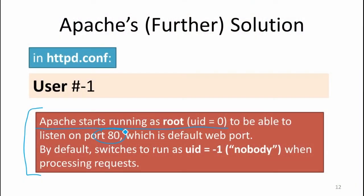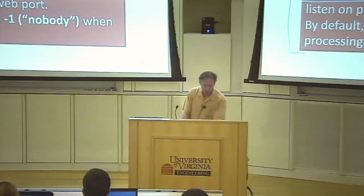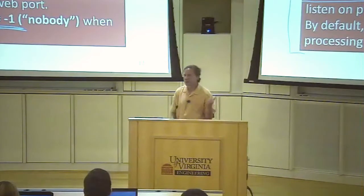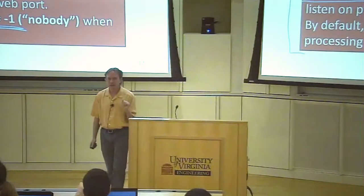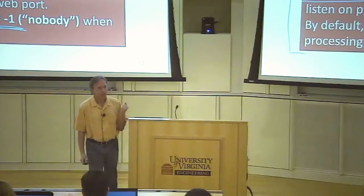What Apache does when it actually processes a request is, instead of running as root, it runs as some other user. This is like the Android model — Android is built on Linux, and every application you install has its own user ID, running as though it's a separate user. That keeps apps isolated and prevents them from accessing each other's data. Apache takes the same strategy: when processing an incoming request, it reduces the server's privileges so it's not as risky.